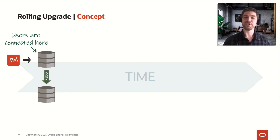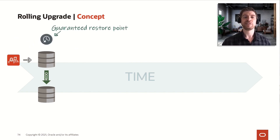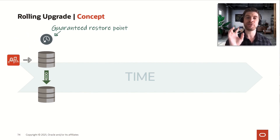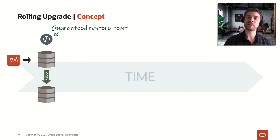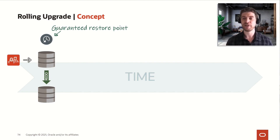We have our users connected on the primary database. The first thing we do is create a GRP — a Guaranteed Restore Point — in our primary database. This step is very important; don't forget it. To do the transient logical standby upgrade, we first create this GRP in our primary database.